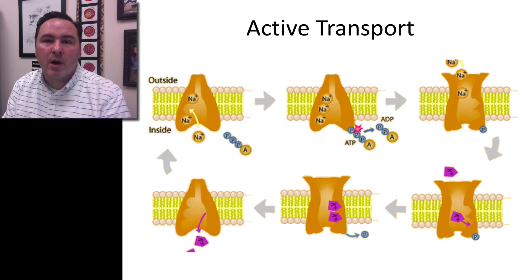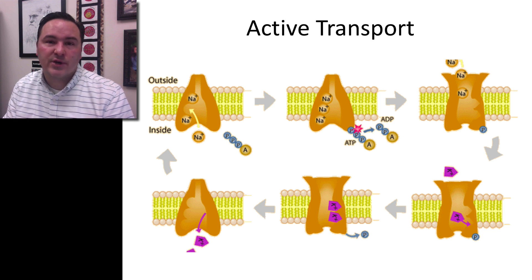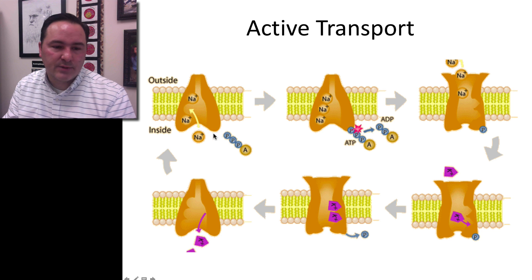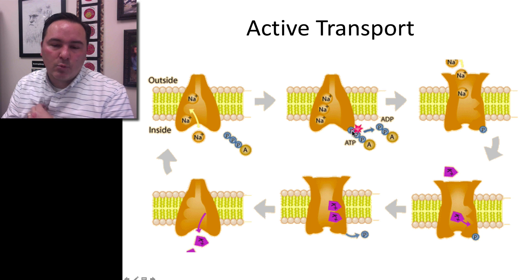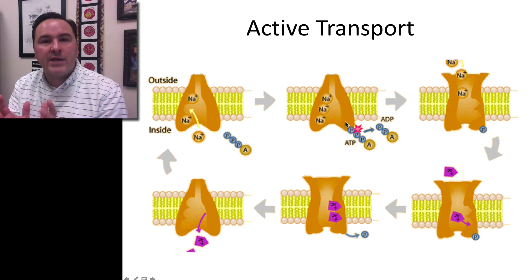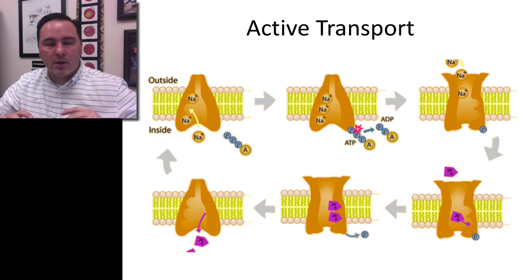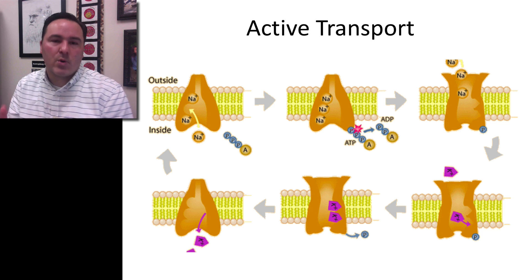There is also a form of moving molecules across the membrane called active transport. This is where molecules move from an area of low concentration to an area of high concentration — against the concentration gradient. In order to do this, it requires energy. Here's an example: this protein has a particular shape and sodium ions dock on it. Then an ATP molecule comes in and binds. One of the phosphorus molecules is cleaved off, and that allows the protein to use that energy and change its shape, throwing those sodium ions onto the other side of the membrane — moving molecules from low concentration to high concentration against the gradient.